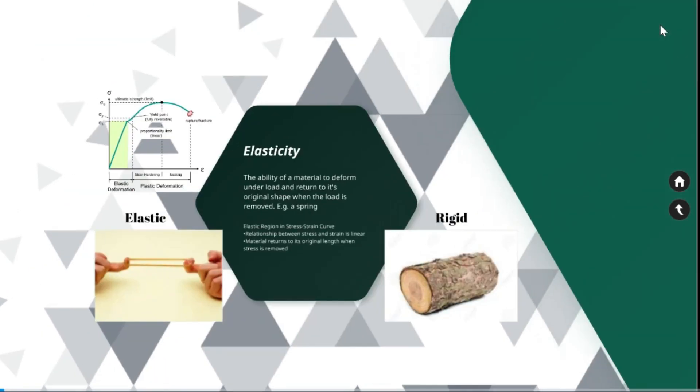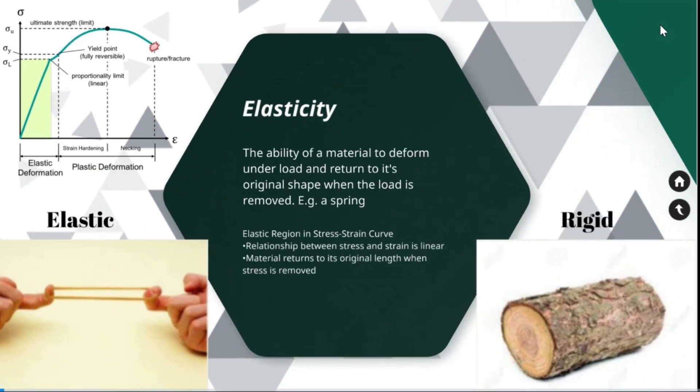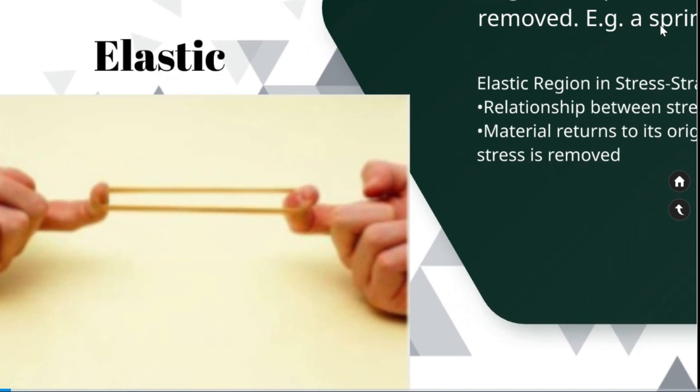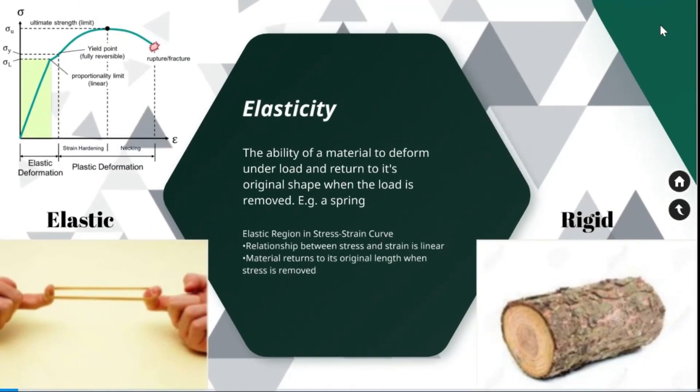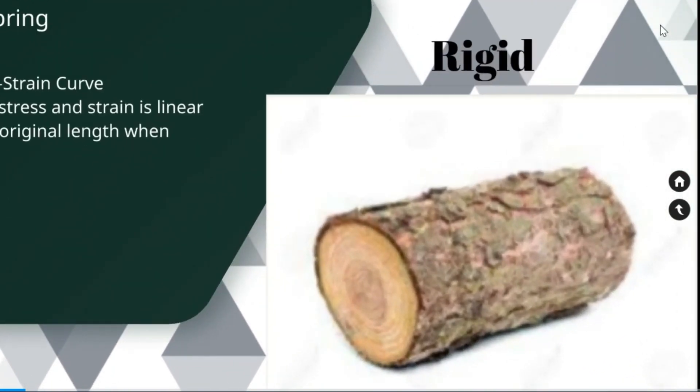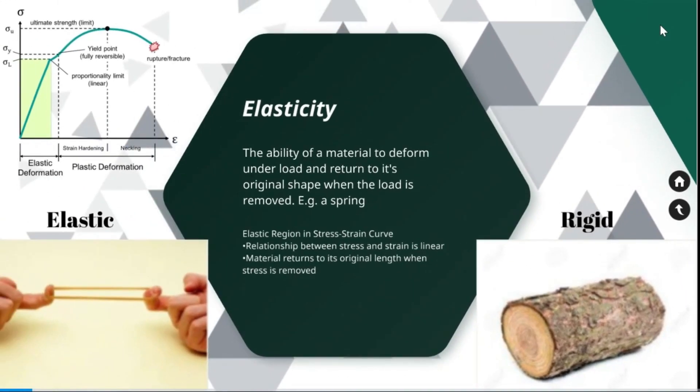Elasticity. The ability of a material to deform under a load and return to its original shape when the load is removed is called elasticity. If you stretch an elastic or a spring, that will get stretched out. When you remove the force, that will return to its original shape.